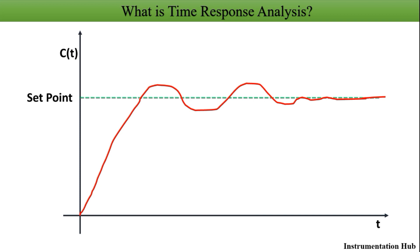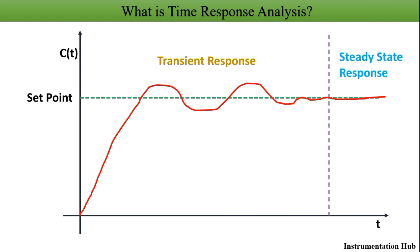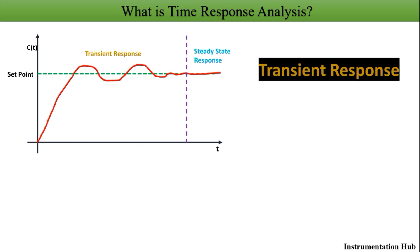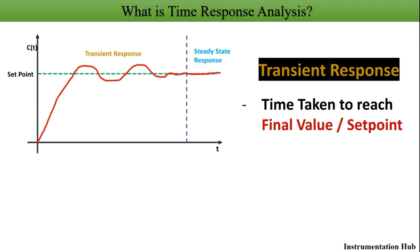I will divide this signal into two parts. The output signal before the dotted line is our transient response, and the output signal after the dotted line is our steady state response. Transient response is the response or time taken by a control system to reach the set point or the final value. The definition of transient response is: the variation of the output from the initial value to the final value after giving input to the system.